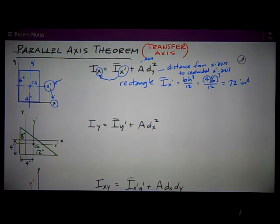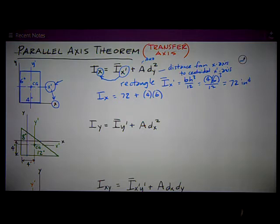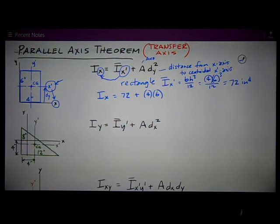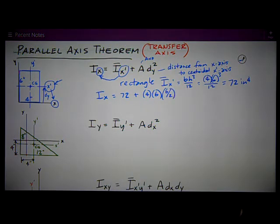Moments of inertia are in units of some dimension to the 4th power. Therefore, the parallel axis theorem says that Ix equals 72, plus the area, which is 4 times 6, or 24, times this dy distance squared. I'm going from the new axis to the centroidal x-prime axis. So that distance is half of its height, or 6 divided by 2, squared. That works out to be 288 inches to the 4th power.